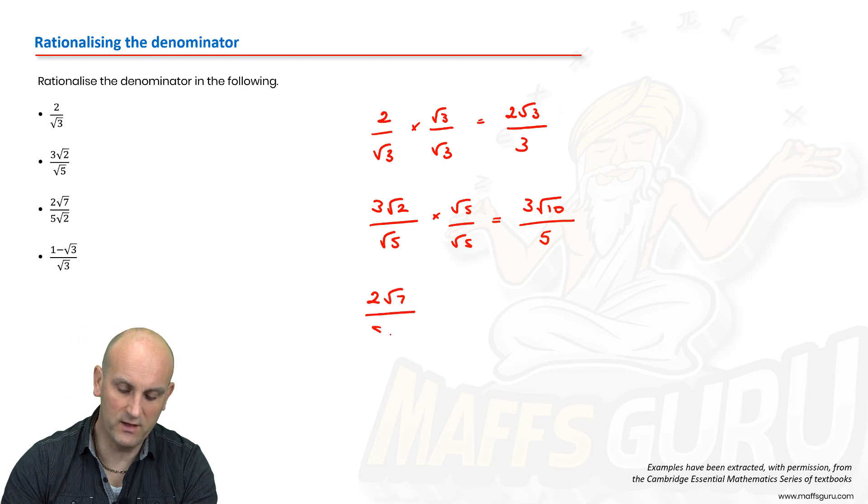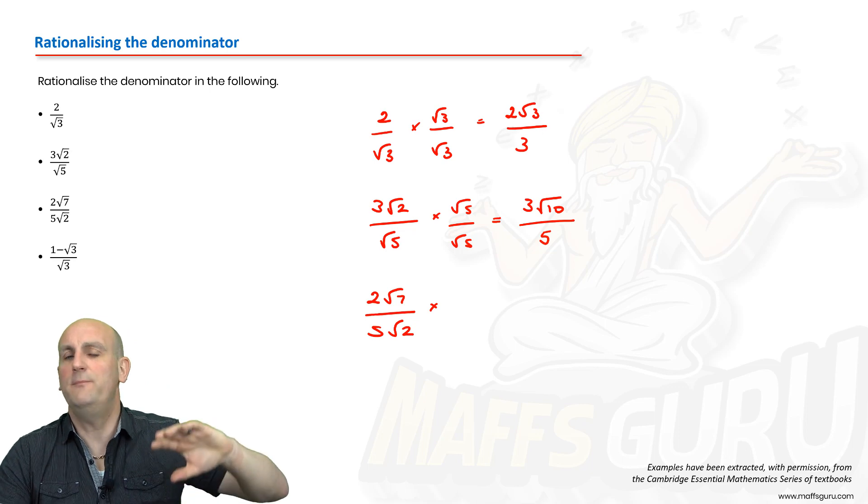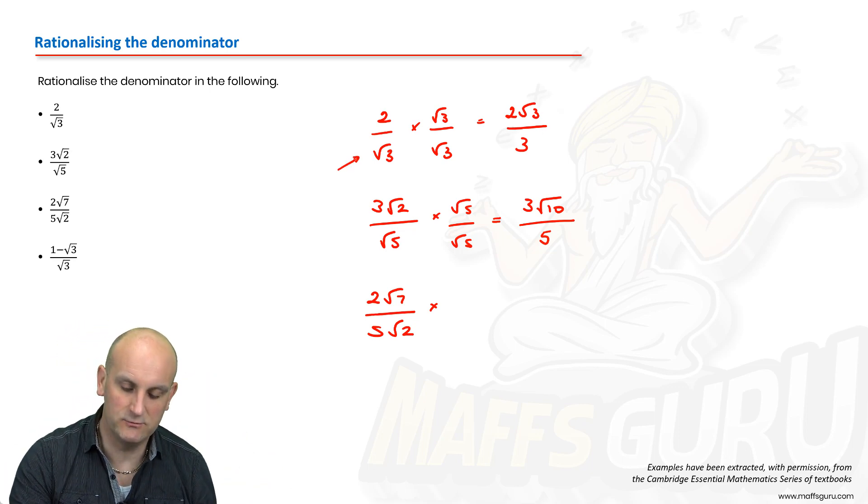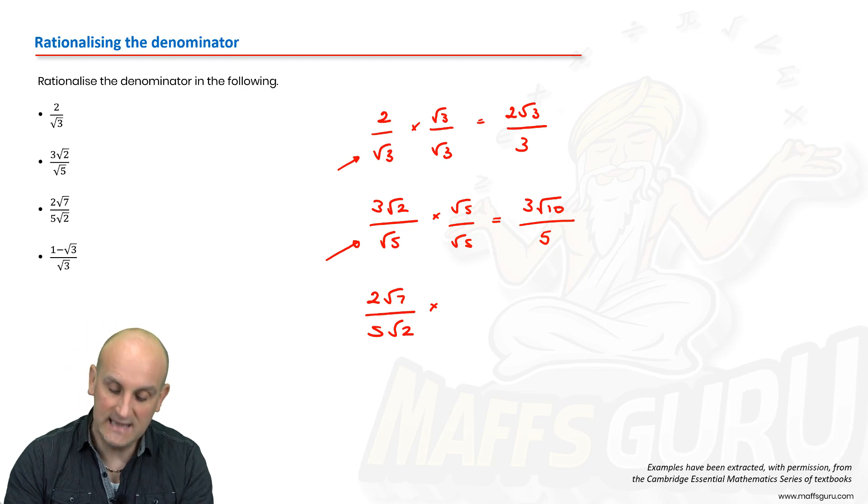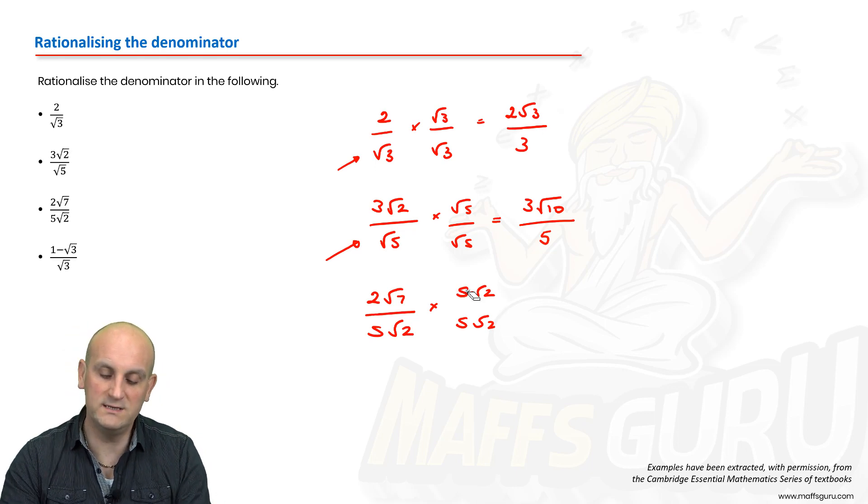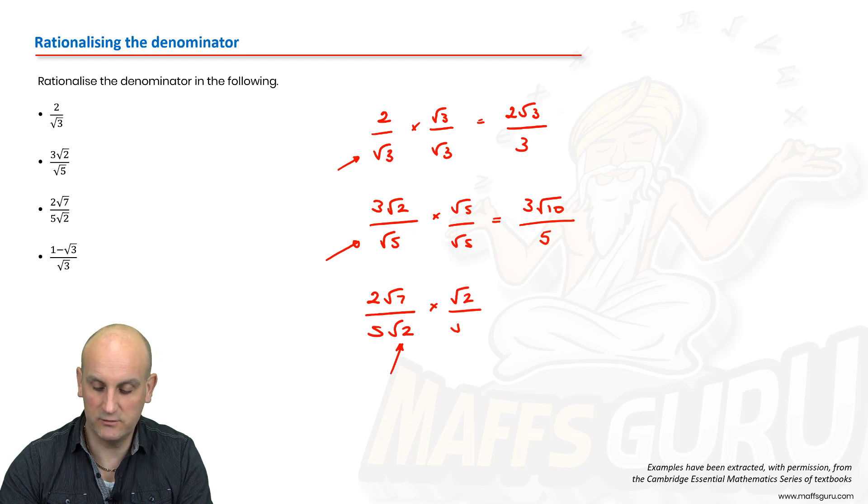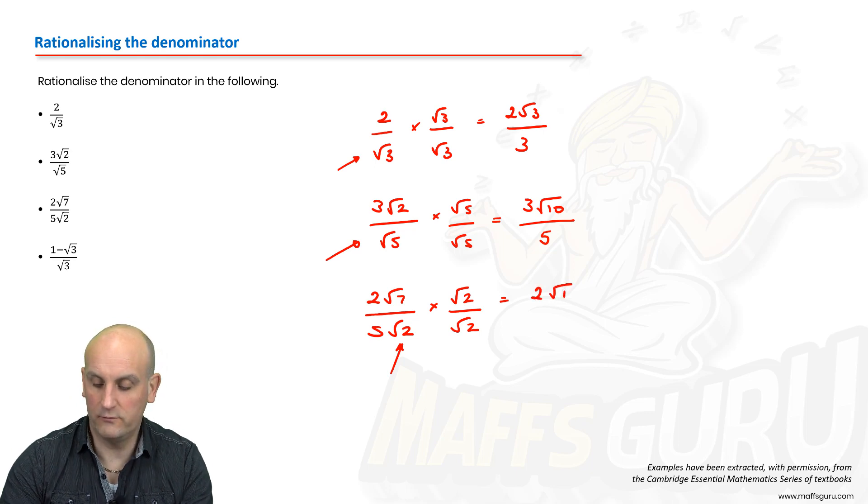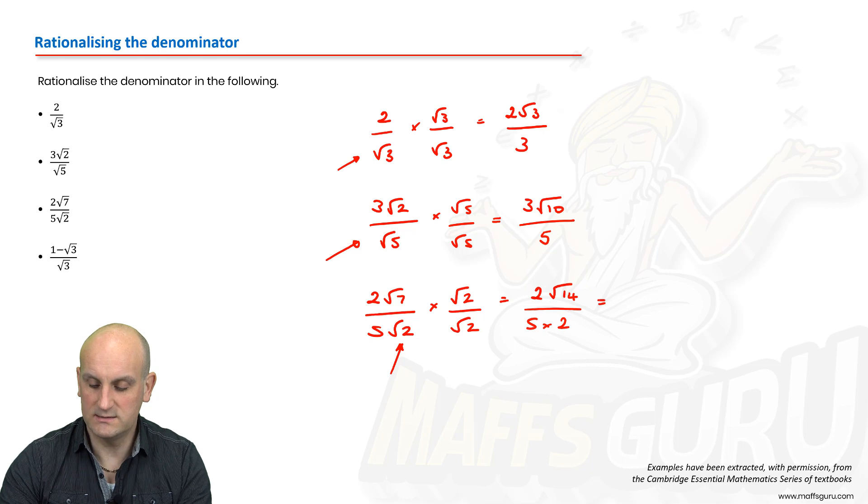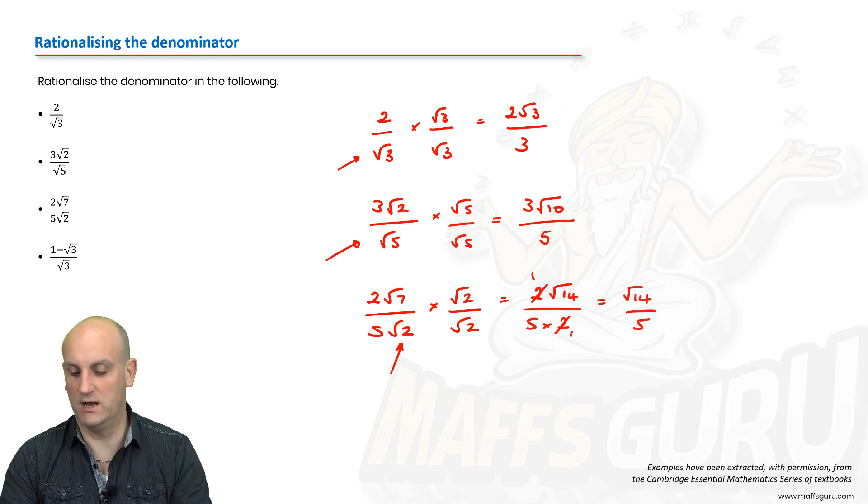2 root 7 divided by 5 root 2. Now this is where we get tricky. It's not about multiplying the bottom by what's on the bottom. What is it we're trying to get rid of? We're trying to get rid of this root 2. So actually it makes sense to just multiply by root 2 on root 2. I don't need that additional 5. What now happens? I get 2 times the root of 14 because root 7 times root 2 is that. I get 5 times root 2 times root 2 is 2. And so I can now do some cancelling out. That 2 there cancels with that 2 there. So I get root 14 on 5. And there is my final answer.